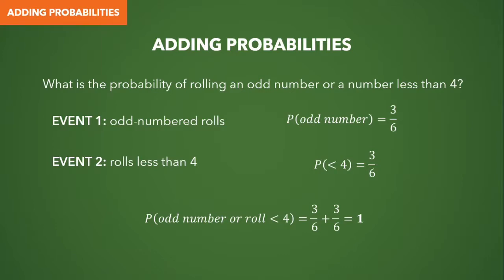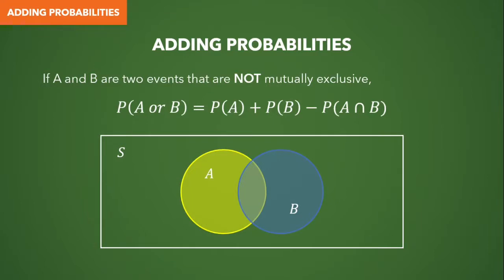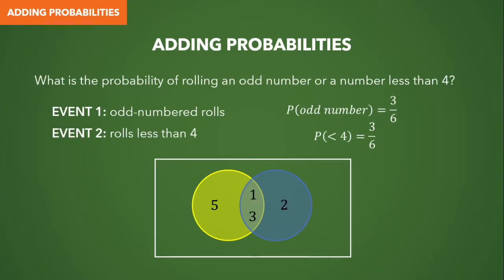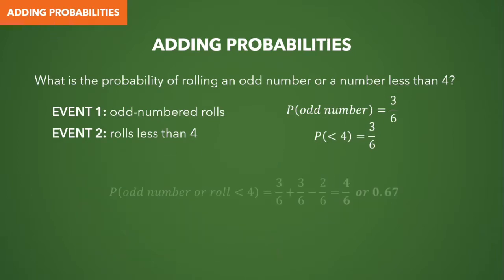Let's prove that by adding the probabilities: the probability of getting an odd number is 3 out of 6 (0.5), and the probability of rolling a number less than 4 is also 3 out of 6 (0.5). Adding these gives 1, implying we are 100% certain — but we know we can roll a 4 or 6, which are neither odd nor less than 4. So for events that are not mutually exclusive, we subtract their intersection to avoid counting common elements twice. The intersection of our two events is 1 and 3, so the probability of the intersection is 2 out of 6. Therefore: P(odd) + P(less than 4) − P(odd and less than 4) = 3/6 + 3/6 − 2/6 = 4/6 or two-thirds, approximately 0.67.